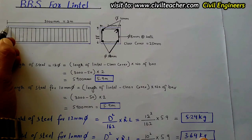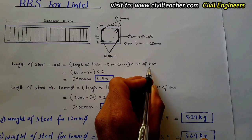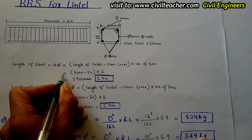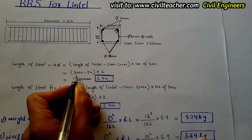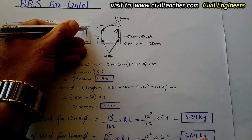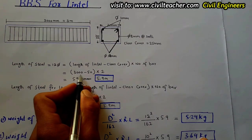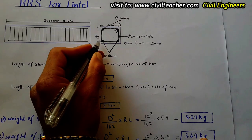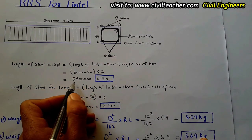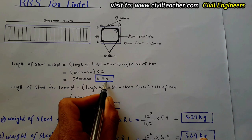The length of lintel is 3000 mm. Clear cover is 25 mm on one side and 25 mm on the other side, so 25 + 25 = 50 mm. So: 3000 − 50 = 2950 mm, multiplied by 2 bars. This gives us 5900 mm, which is equal to 5.9 meters — the cutting length of the 12 mm diameter steel.